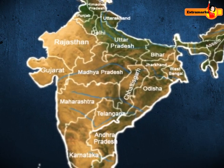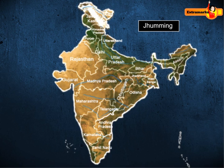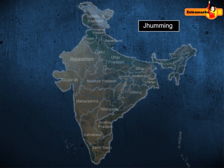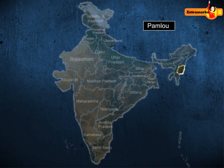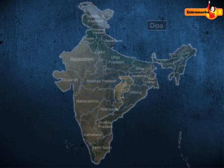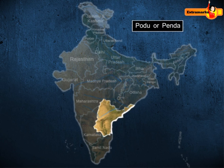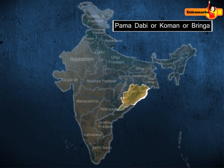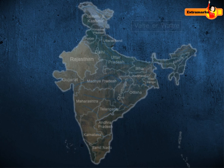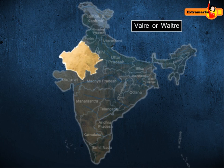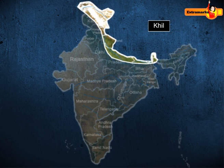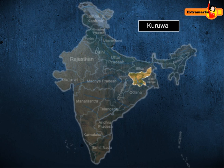Shifting cultivation is known by different names in different parts of the country. It is called Jhumming in northeastern states like Assam, Meghalaya, Mizoram, and Nagaland; Pamlou in Manipur; Dipa in the Bastar district of Chhattisgarh; Kumari in Western Ghats; Walre or Valtre in southeastern Rajasthan; Khil in the Himalayan belt; and Kuruva in Jharkhand.